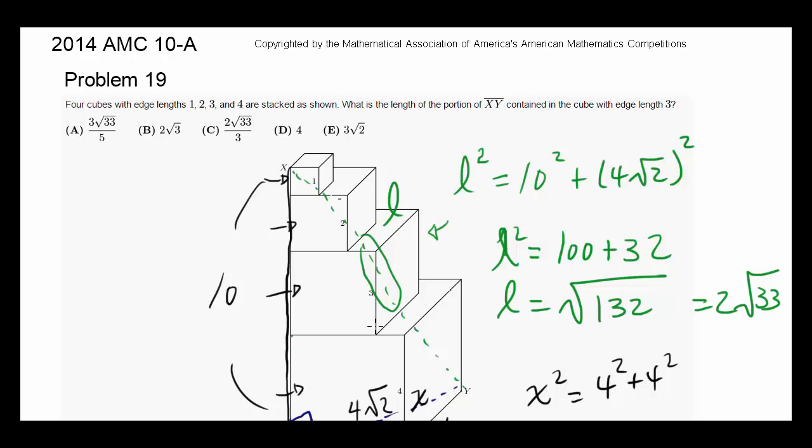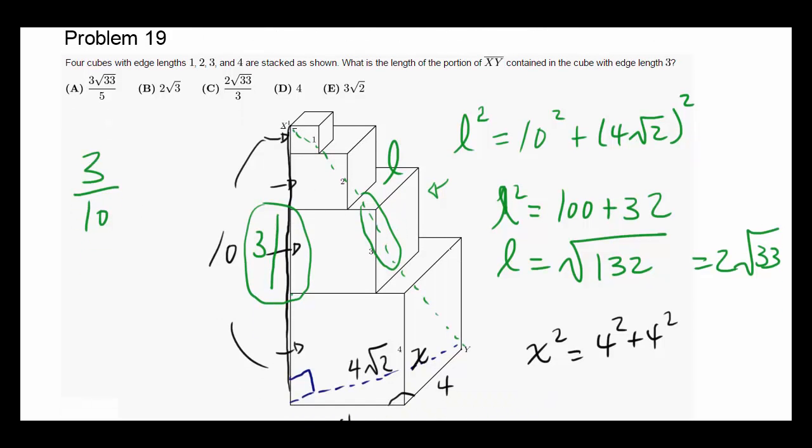Well, we'll start by realizing that the portion, portion of this cube, the length portion of this cube is 3 tenths of the entire length. So the amount of this hypotenuse, or the amount of XY, contained in this cube is also going to be 3 tenths of the entire length, which is going to be 3 tenths times L, or 3 tenths times 2 times square root of 33, known as 3 times square root of 33 over 5.